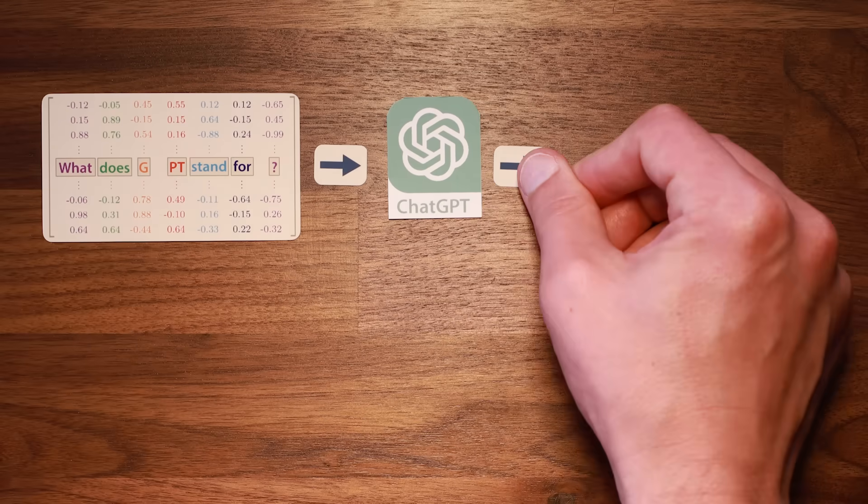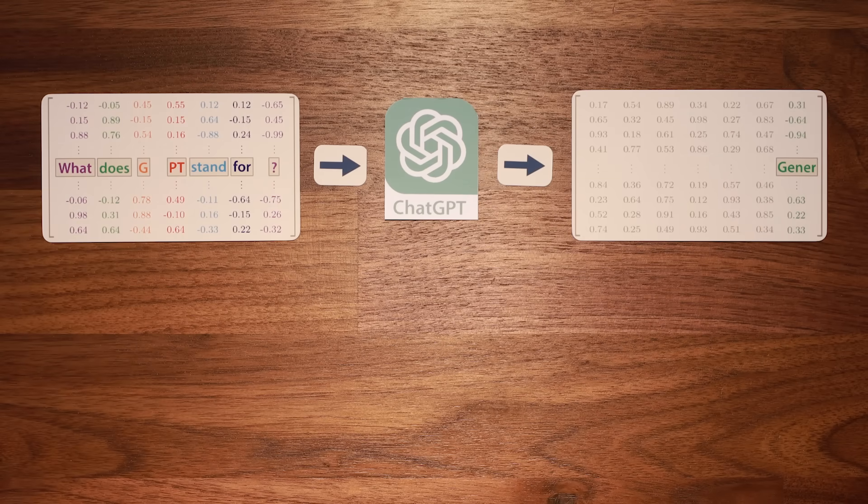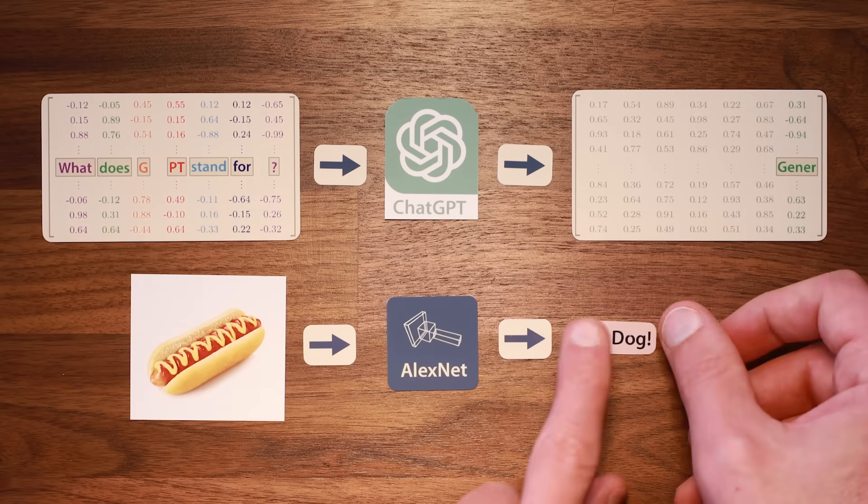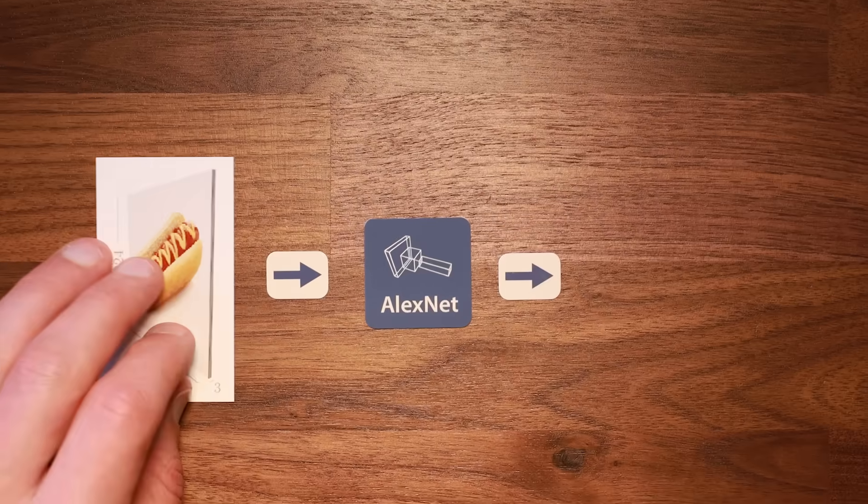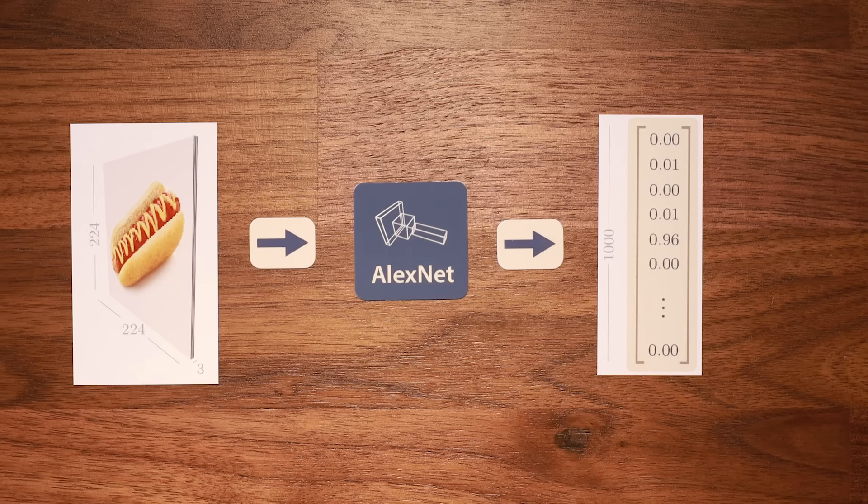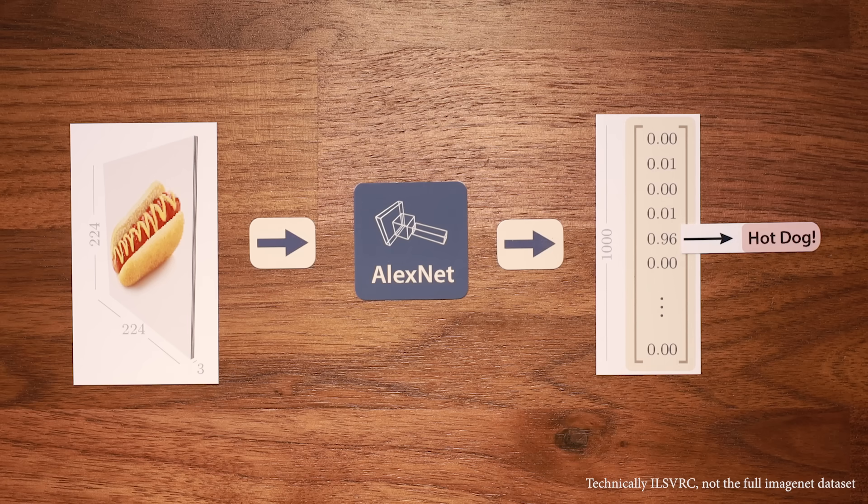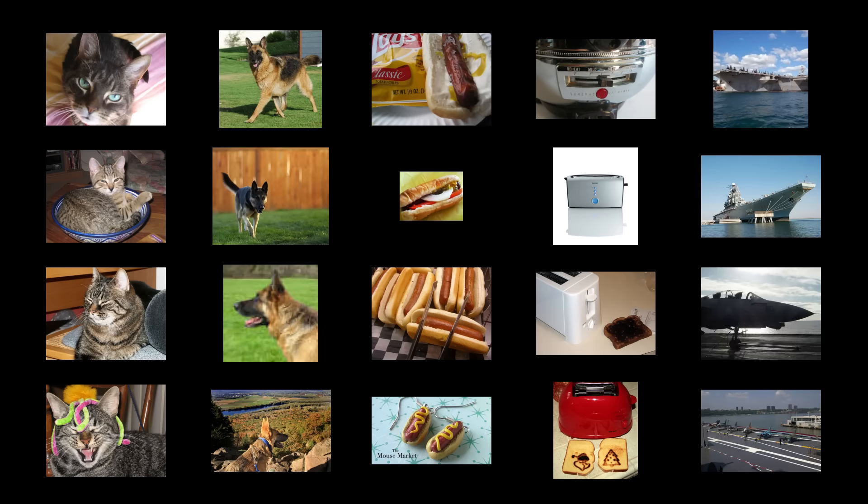While ChatGPT is trained to predict the next word fragment given some text, AlexNet is trained to predict a label given an image. The input image to AlexNet is represented as a three-dimensional matrix or tensor of RGB intensity values. And the output is a single vector of length 1,000, where each entry corresponds to AlexNet's predicted probability that the input image belongs to one of the 1,000 classes in the ImageNet dataset. Things like tabby cats, German shepherds, hot dogs, toasters, and aircraft carriers.